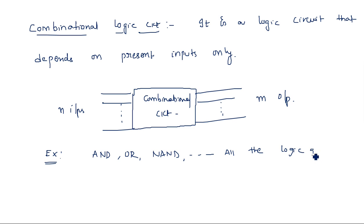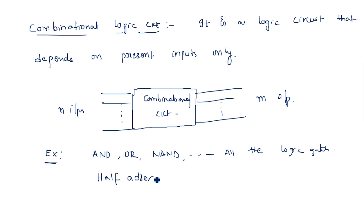Examples of combinational logic circuits are AND gate, OR gate, NAND gate, NOR gate — all logic gates which do not have any memory. Whereas if you are using flip-flops, latches, RAM, those are called sequential logic circuits. At a higher level, half adders, full adders, comparators, multiplexers, and demultiplexers are all examples of combinational logic circuits.